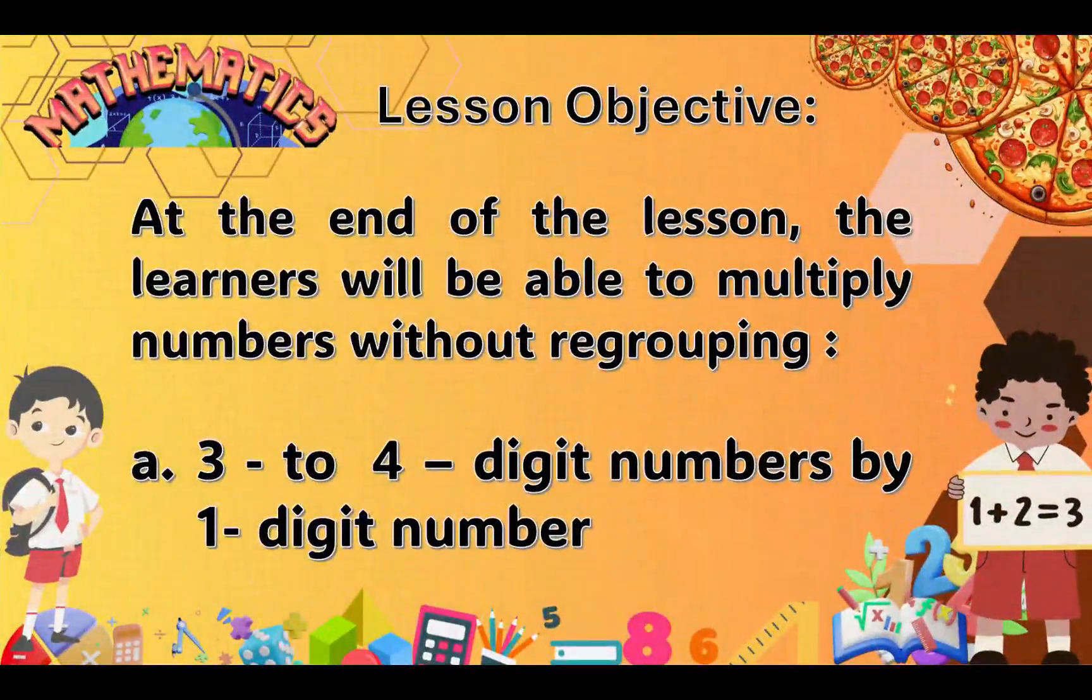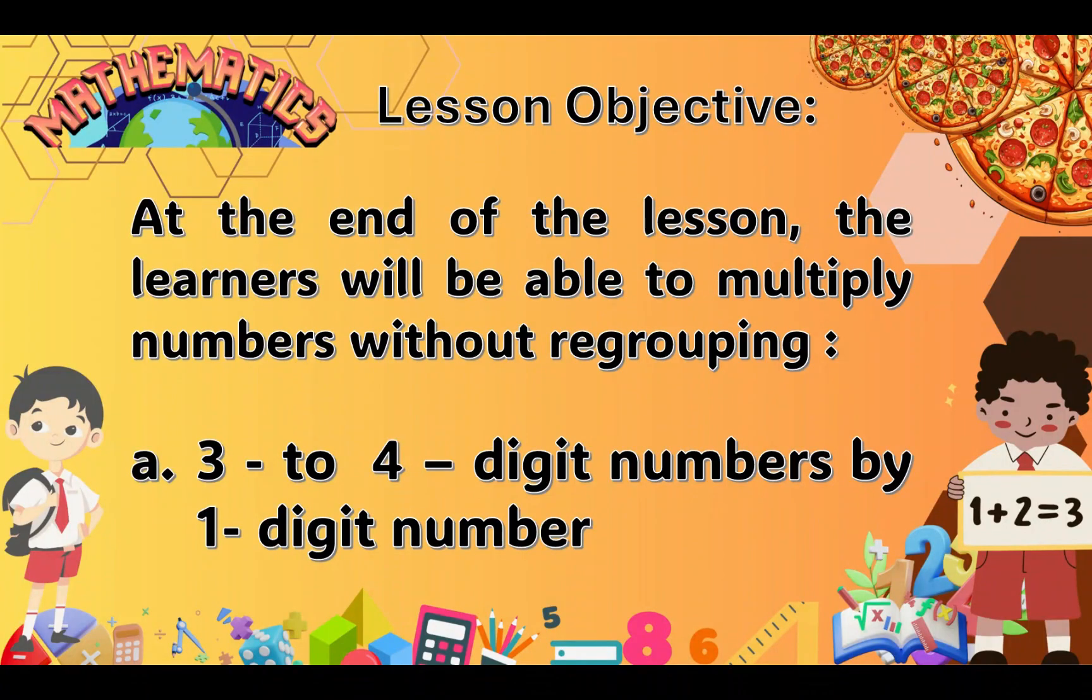Our lesson objective: at the end of the lesson, the learners will be able to multiply numbers without regrouping, 3 to 4 digit numbers by 1 digit number.